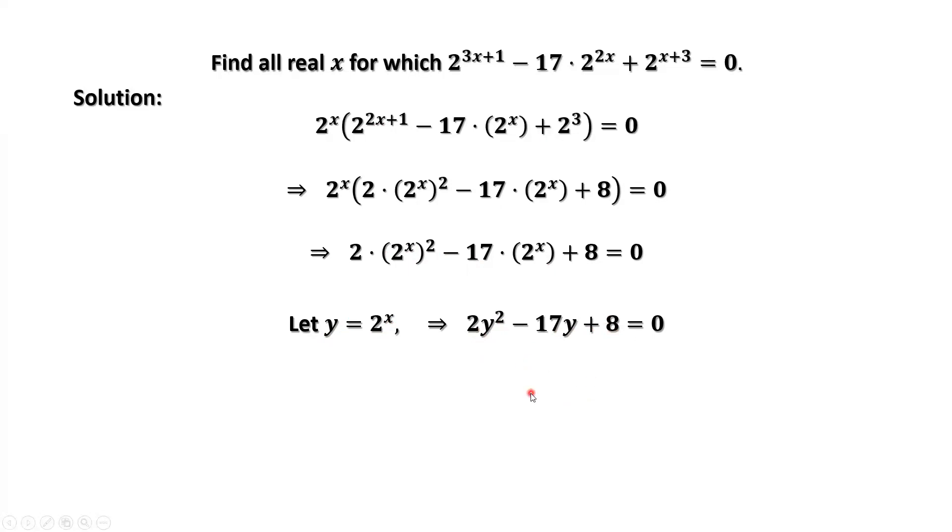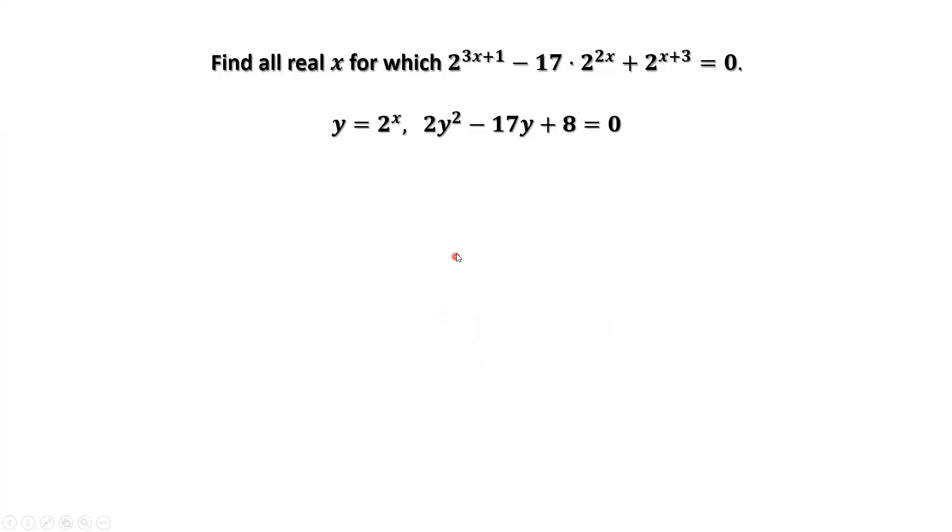This is a quadratic equation. We can use the quadratic formula to solve this equation. Here, a equals 2, b equals negative 17, c equals 8. The quadratic formula is negative b plus minus square root of b squared minus 4ac divided by 2 times a. Then we have this result. Simplify this result. We have 17 plus minus 15 divided by 4, which is 8 or 1 half.